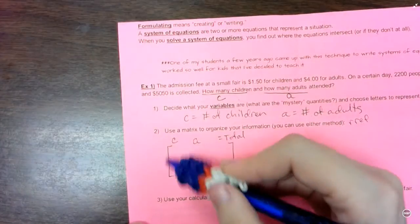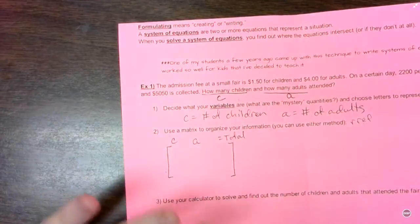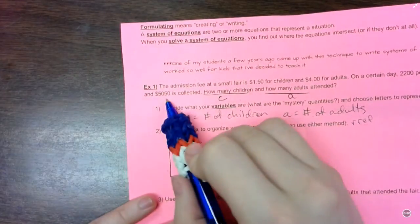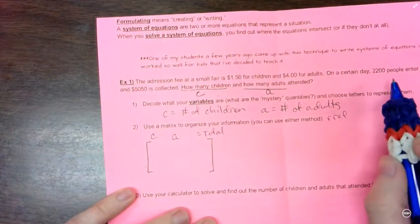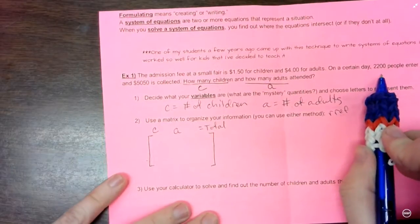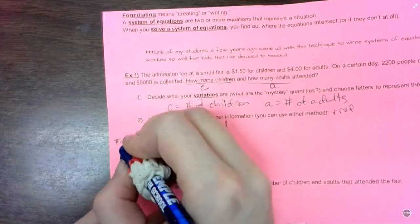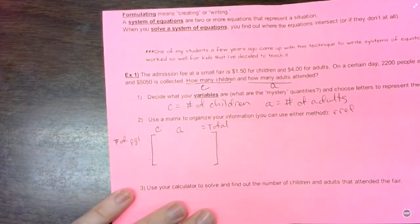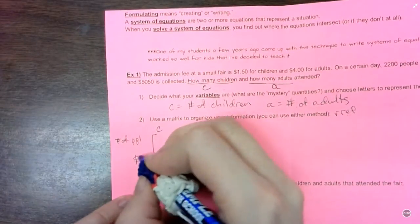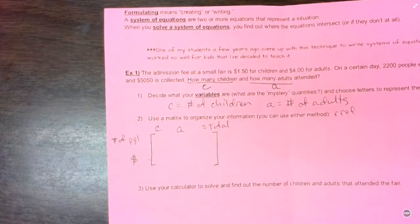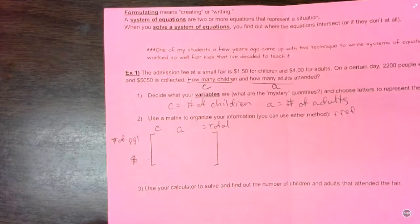Now, for my two equations, I basically have two types of information. I have cost and I have the number of people that showed up. So I'm going to put number of people on the first row and I'm going to put the cost or the dollars collected on the second row. And you can flip flop those. It doesn't really matter which one goes first.